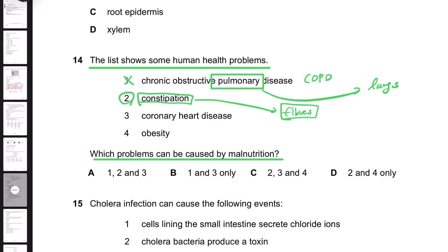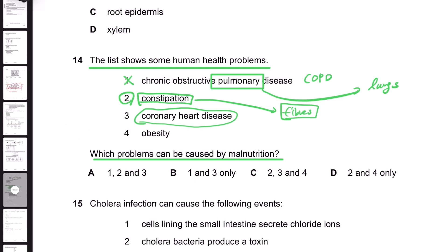So number two is yes. Number three is coronary heart disease. Many students will wonder: isn't coronary heart disease caused by having too much fat, like trans fat? Yes, it is. But it's also related to having a lack of proteins and energy. If there's a lack of proteins, it can actually contribute to the development of coronary heart disease, because having less protein and less energy causes a proportional loss of skeletal and myocardial muscle. So the heart muscle becomes weaker if there's less protein, and that can cause coronary heart disease.